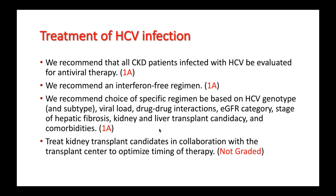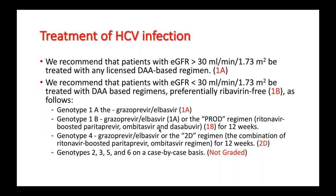All kidney transplant candidates should be treated in collaboration with transplant centers. For specific treatment recommendations, all patients with eGFR greater than 30 should be treated with any of the available directly acting antiviral-based regimens. Patients with eGFR less than 30 should preferably be treated with ribavirin-free directly acting antiviral agents. For genotype 1A, the recommendation is to use a grazoprevir-elbasvir combination regimen, and for genotype 1B, grazoprevir-elbasvir or the PROD regimen combining four agents.